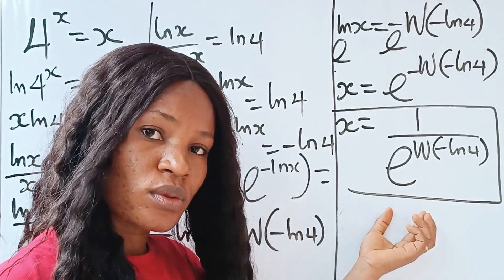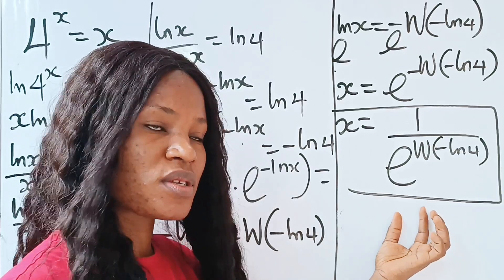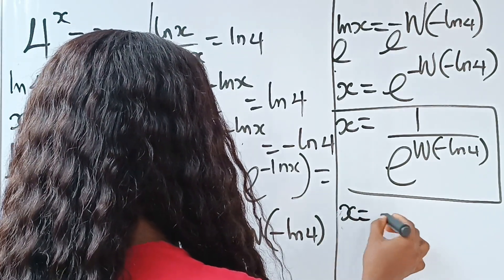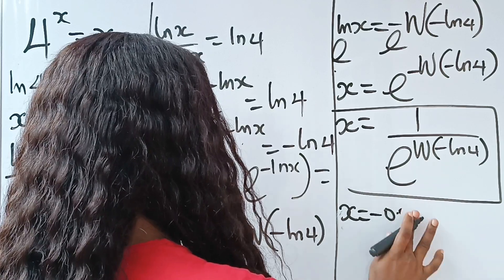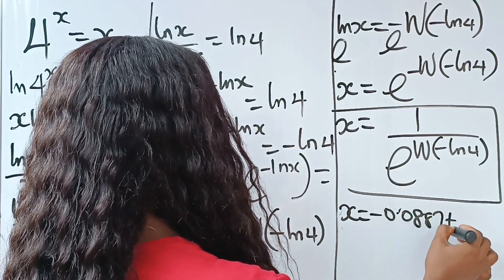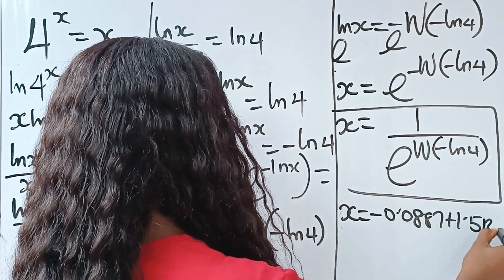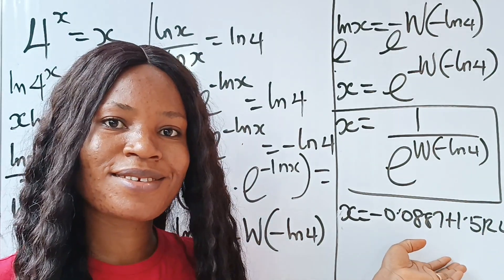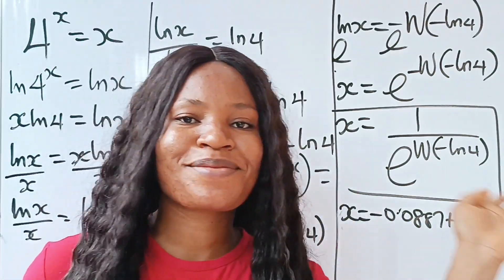This is not a real root — it is a complex root. The value is x = −0.0887 + 1.512i. So this is a complex solution. Thank you so much for watching.